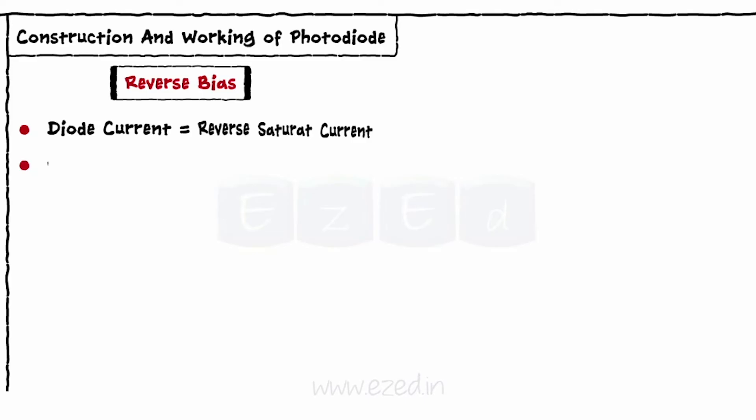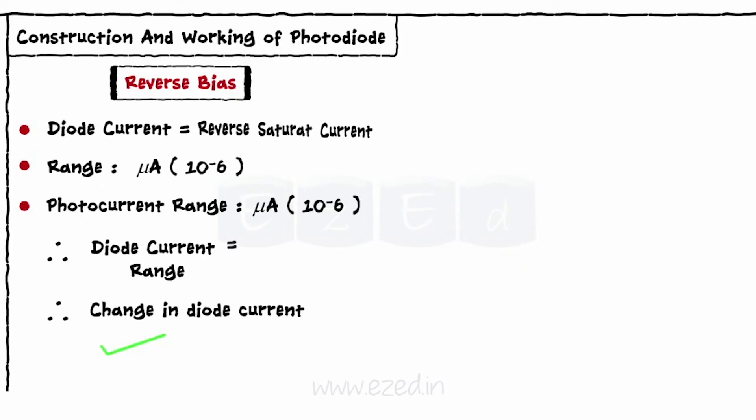The current is in microampere range. The photocurrent that gets generated is also in microampere range. Thus, we can easily identify change in the diode current after generation of a photocurrent.